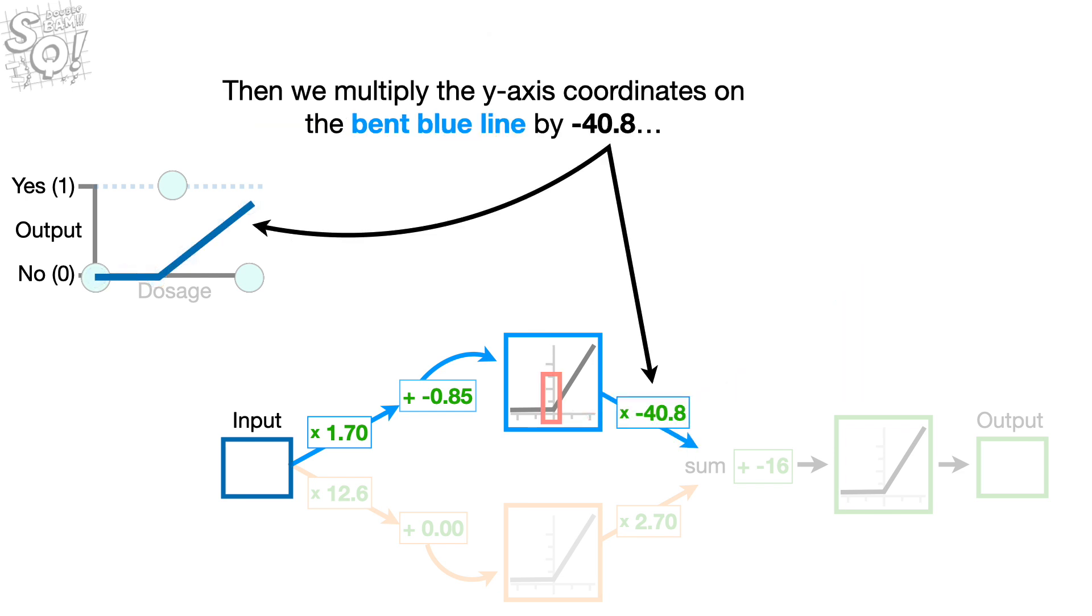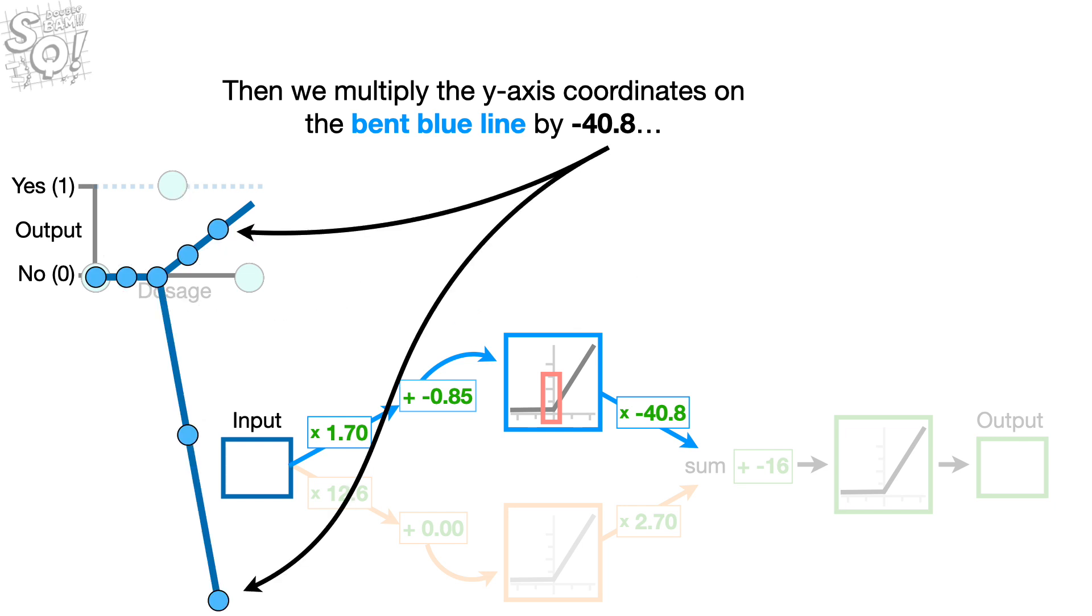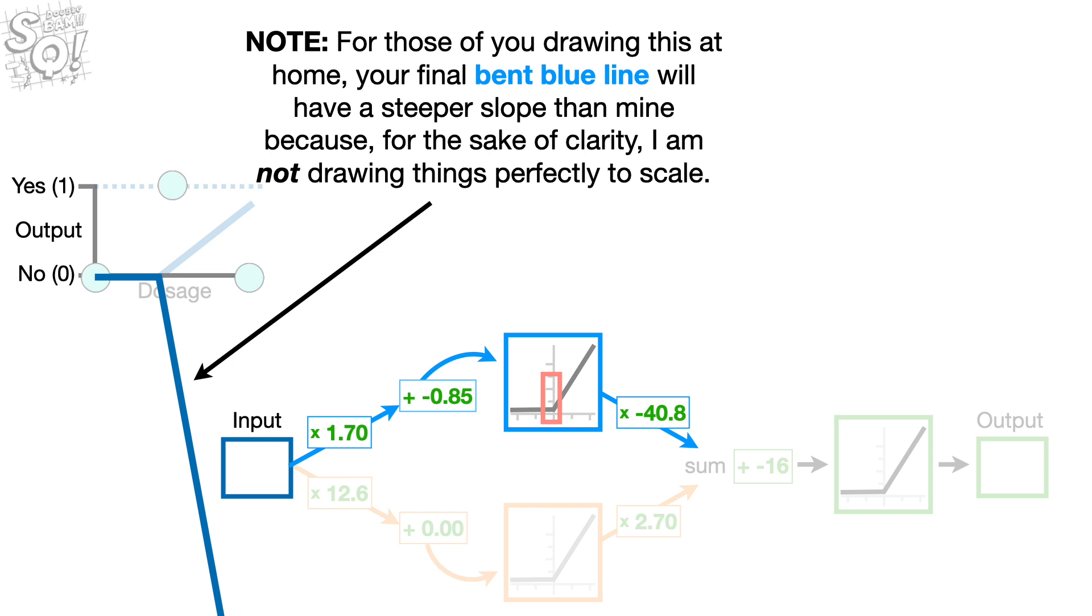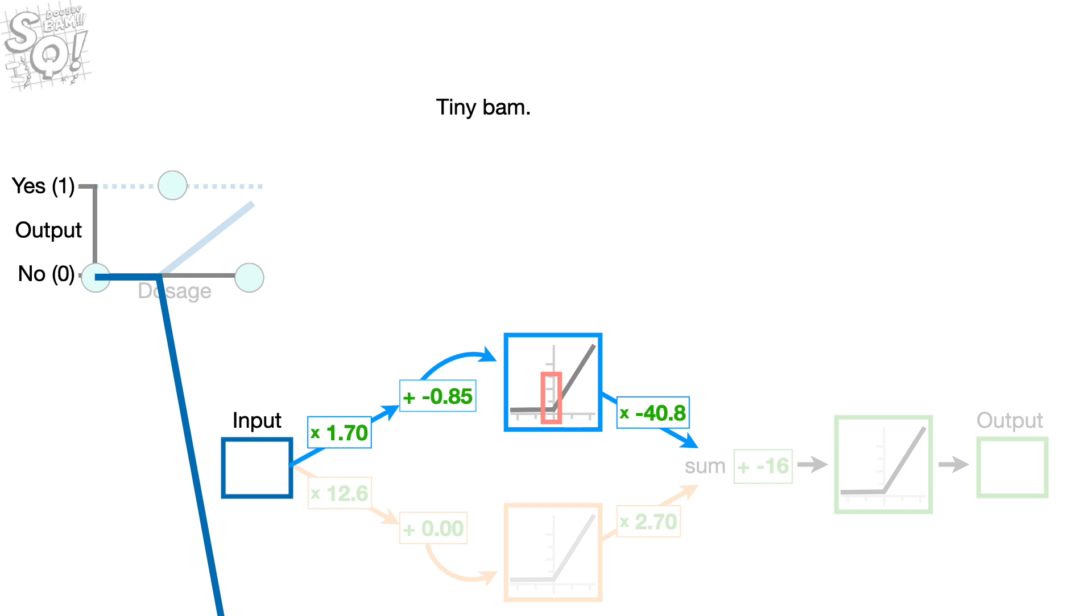Then we multiply the y-axis coordinates on the bent blue line by negative 40.8. And the new bent blue line goes off the screen. Note. For those of you drawing this at home, your final bent blue line will have a steeper slope than mine because, for the sake of clarity, I am not drawing things perfectly to scale. Tiny bam.